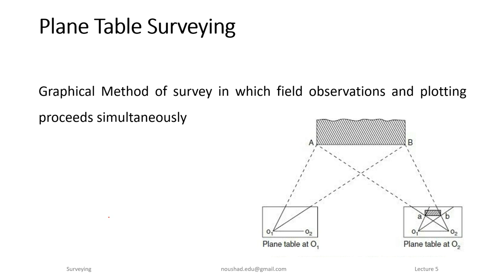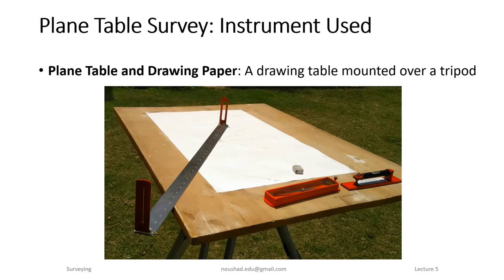Now, the instruments used for plane table surveying include a table and tripod. As you can see, there is a drawing sheet placed on the table. The plane table is used with a drawing paper fixed on it.